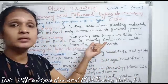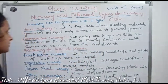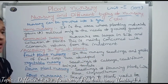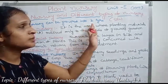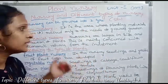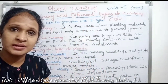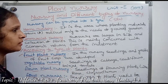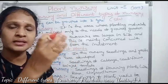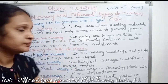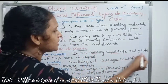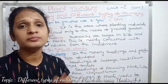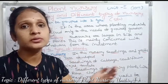According to the type of plants developed in the nursery, there are further classifications. First one: fruit plant nursery. In this nursery, seedlings and grafts of fruit crops are developed.